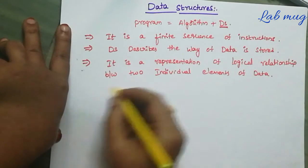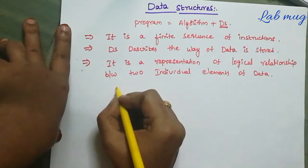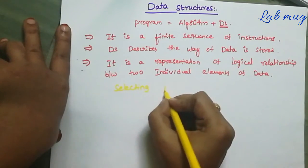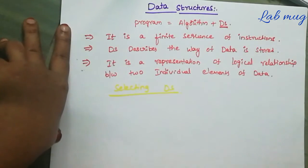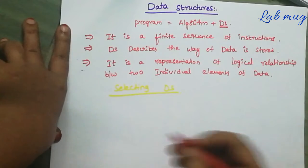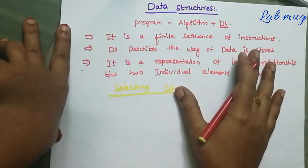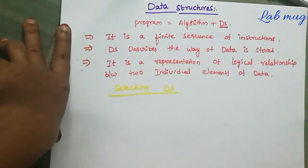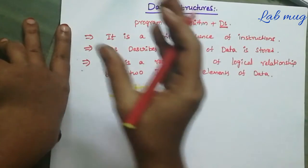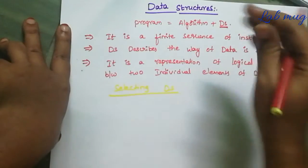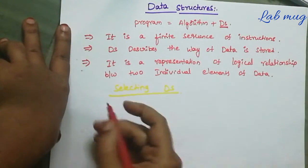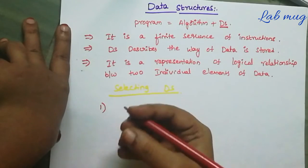Some more important points about data structures - selecting data structures. The very important thing is selecting data structure. So number of data structures uundetai, but number of data structures lo manam particular data structure yela use cheppa edha anandu. Particular data structure naakki e problem ki solution - e problem ki e data structure solution manam yela design cheppa edha anandu, based on some points.